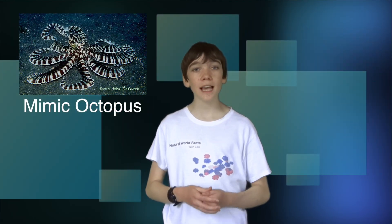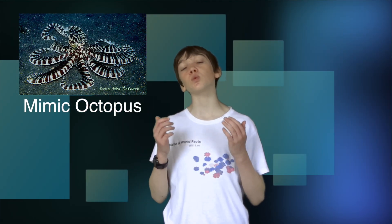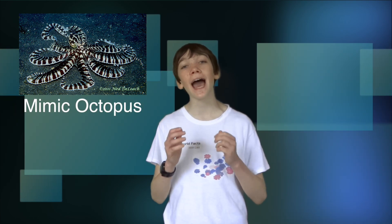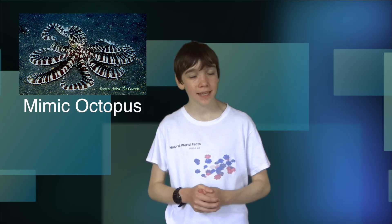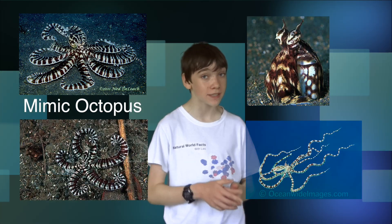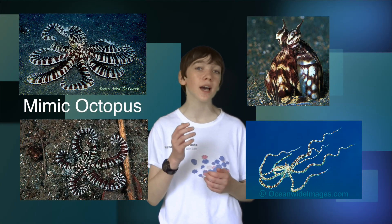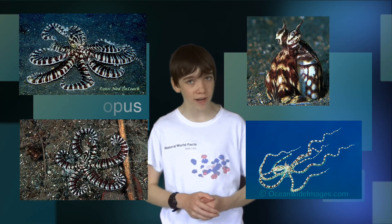The mimic octopus also has behavioural as well as structural adaptations. This species of octopus can mimic the look and behaviour of several sea creatures, including sea stars, crabs and jellyfish, in order to disguise itself from predators.